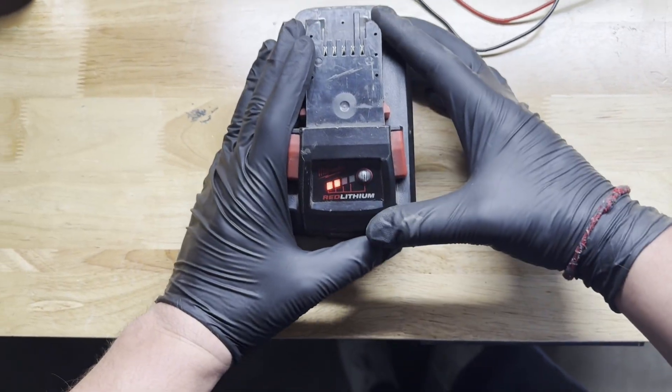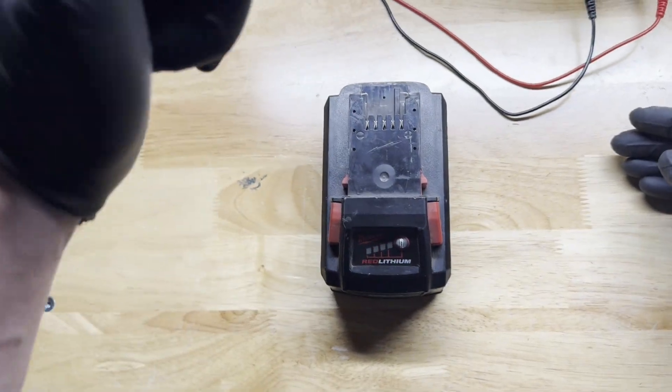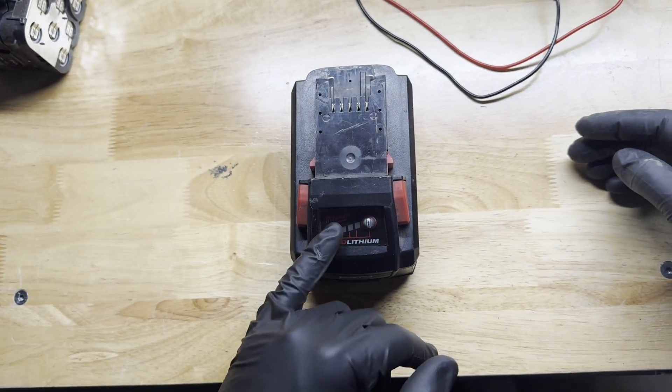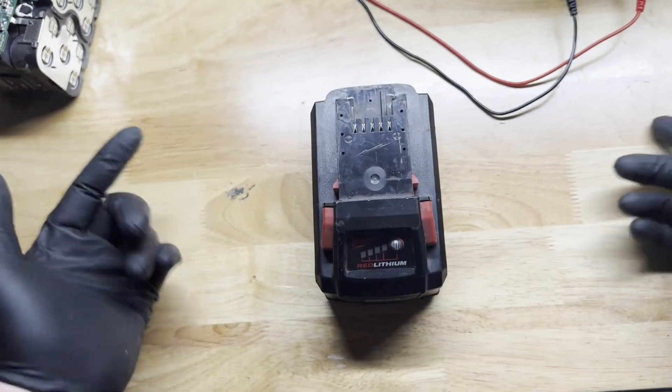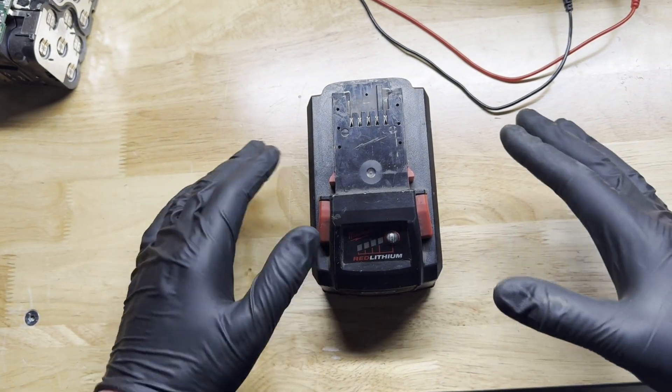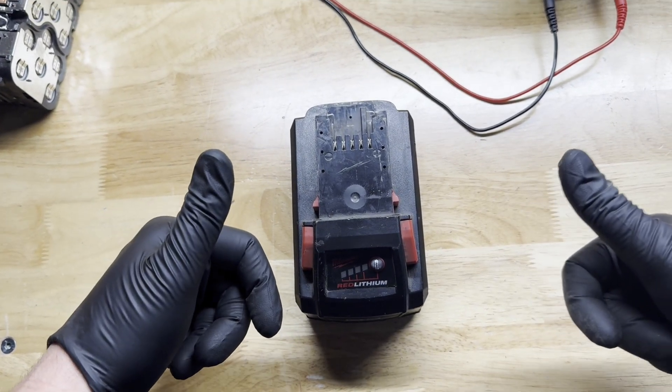All right. So I went ahead and ran it down to two bars. So what we're going to do is we're going to pop it on the charger. Make sure one, it hits four bars. Two, take it apart. Check all the cells. Make sure they're still mostly in balance and then I think we'll call it good.